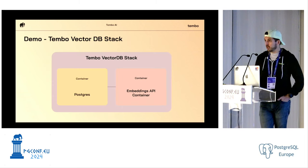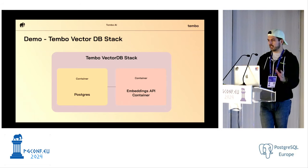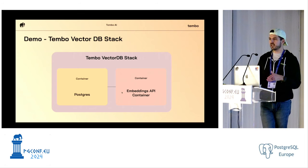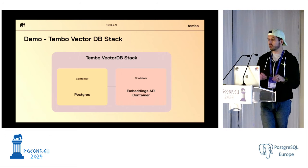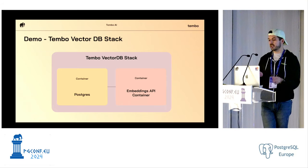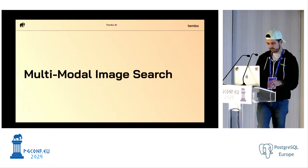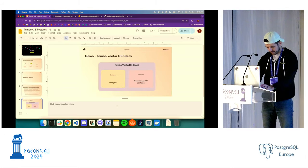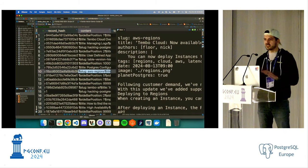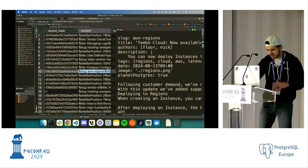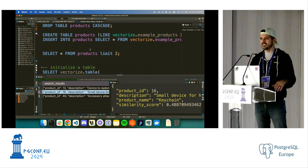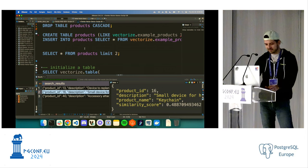Here's how this demo is set up: there's a Postgres database and then a container running next to Postgres that hosts an embedding model. We're going to use a SQL API to take a table in Postgres, generate embeddings from that whole table, and then search that table. I'm going to be bouncing back and forth between slides and DBeaver, my SQL editor of choice.